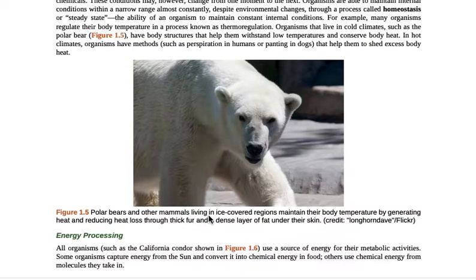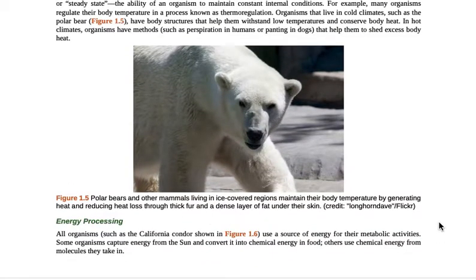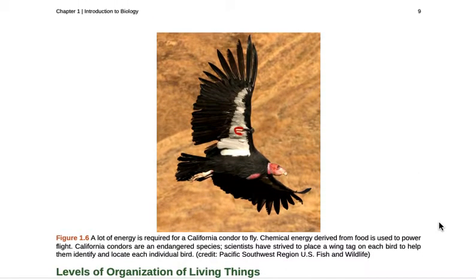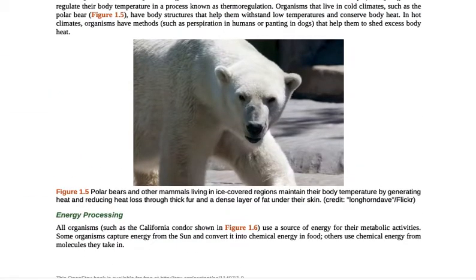And the next one is energy processing. This is using different things in the environment and using them for energy for survival. So this can be plants using energy from the sun. It can be like this really cool California condor that's there that's going to eat dead and decaying matter.